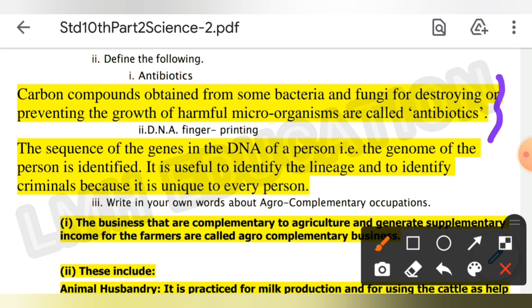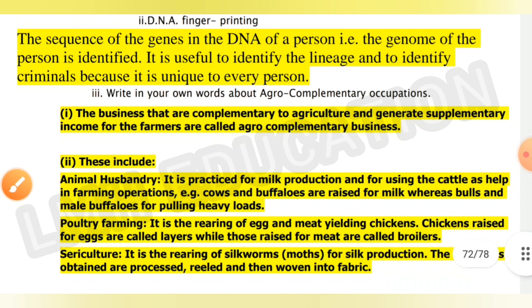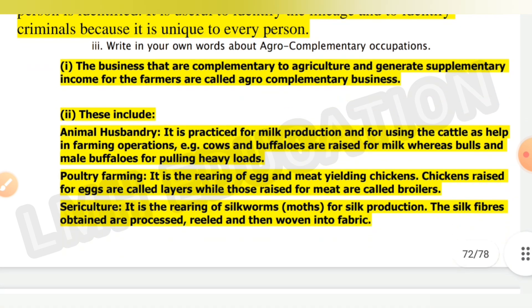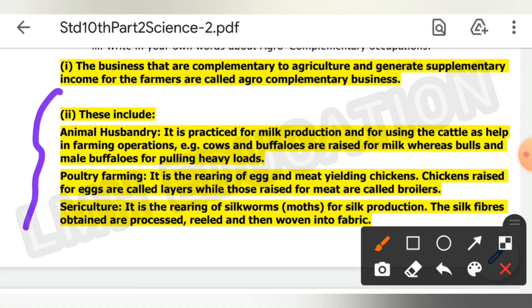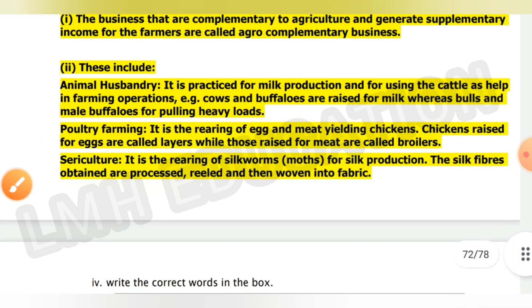Next, write in your own words about agro-complementary occupations: businesses complementary to agriculture that generate supplementary income for farmers. This includes animal husbandry, poultry farming, and aquaculture. These are described on screen and you can write this in your answer.